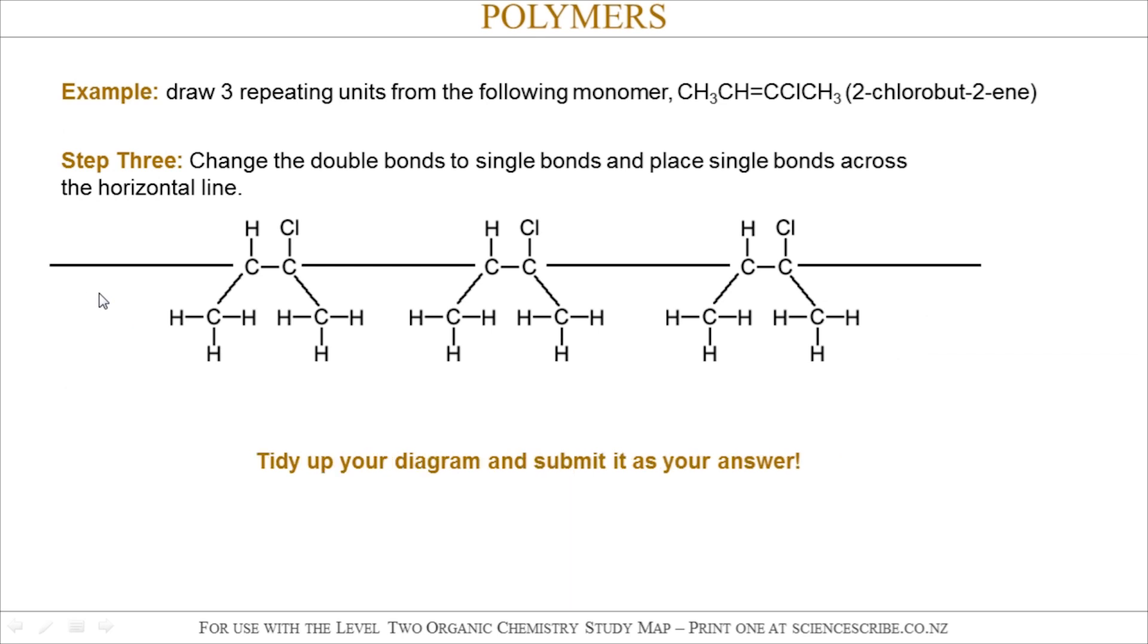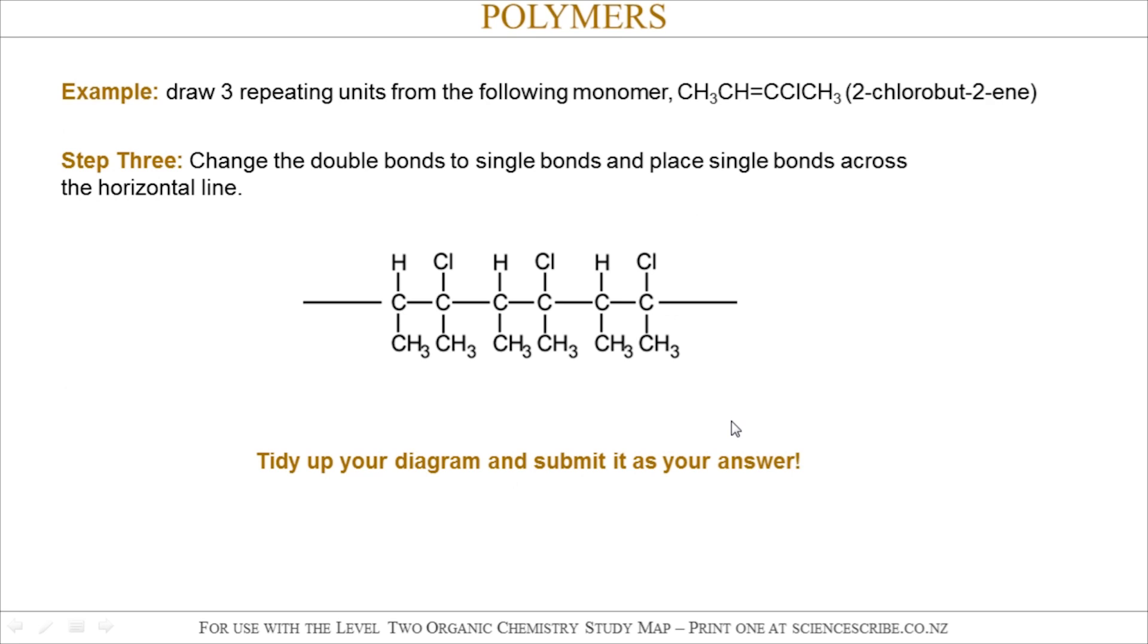After that, I'm going to tidy up my diagram which will be my final answer. Now if I'm going to try to name this particular polymer, I have to come back to the name of the original monomer, which was 2-chlorobutene. I write it down, stick it in brackets, and stick the word poly in front. Done.